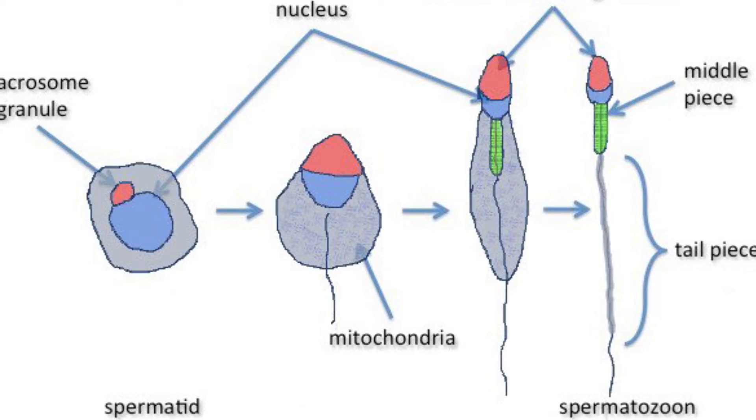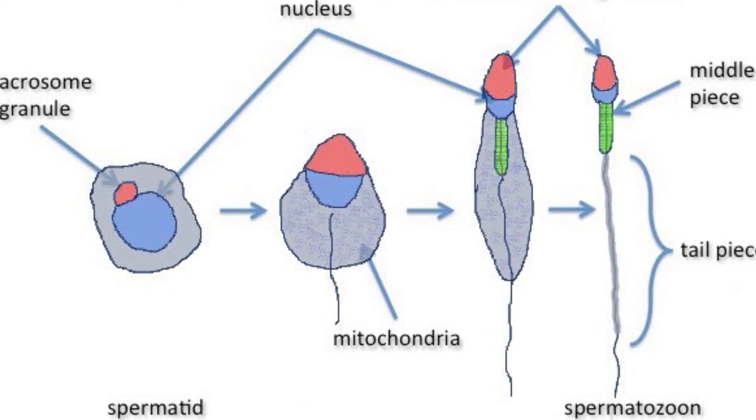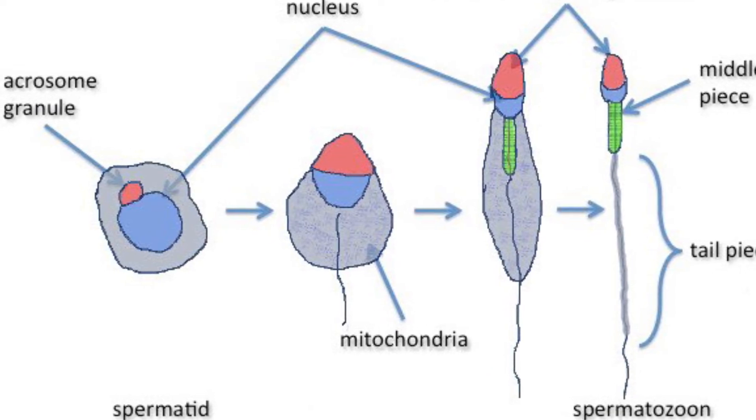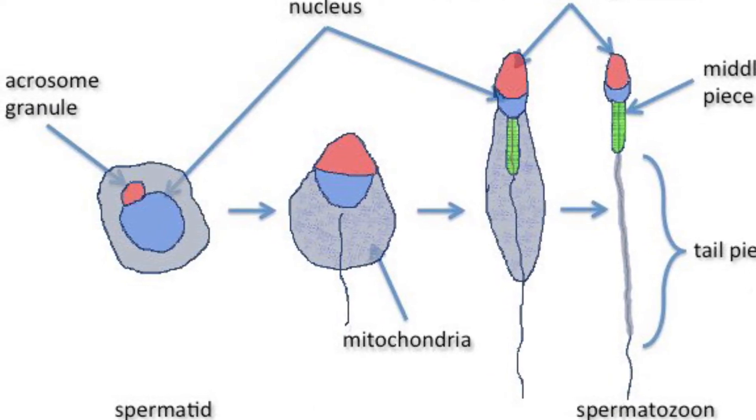And the third stage is spermiogenesis, which is a complex process that transforms round spermatids after meiosis into a complex structure called the spermatozoon.